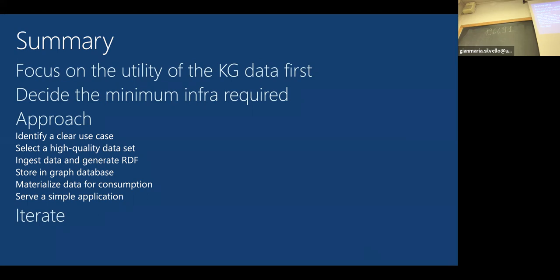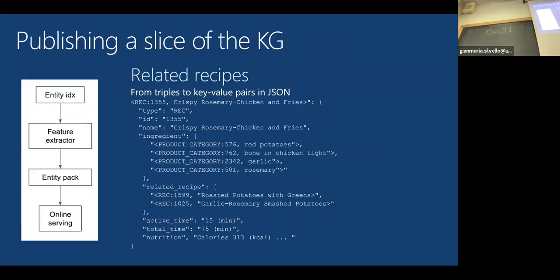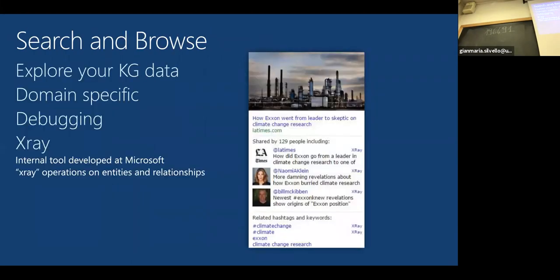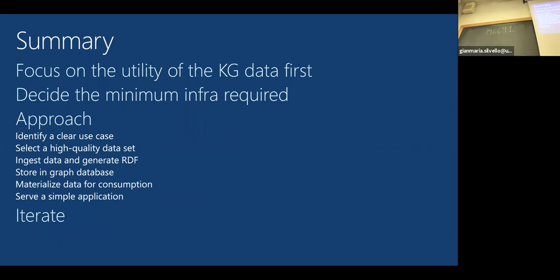The workflow: first identify a clear use case. Second, select high-quality datasets—Wikipedia, medical ontologies—and if you have to crawl, make sure you get high-quality content. Ingest the data using RDF if you want semantic web solutions; otherwise use plain text or key-value stores in some graph format. Then materialize the data for consumption: do all the heavy lifting so the application just gets JSON, XML, CSV, or plain text.